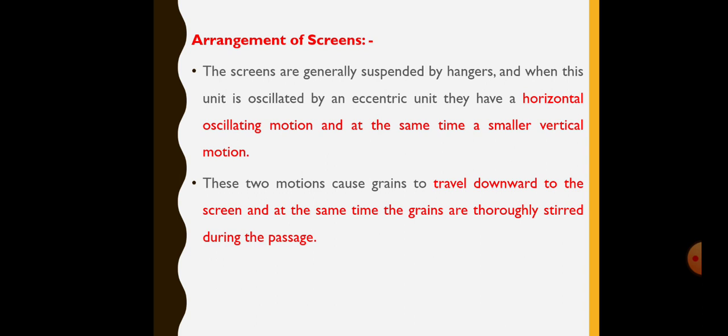This motion in combination causes the grain to travel downward to the screen and at the same time the grains are thoroughly stirred during the passage. Out of these two motions, horizontal motion helps the grain to travel downward towards the other end of the screen. Whereas,